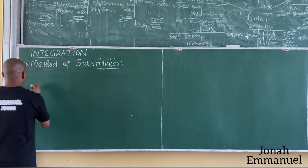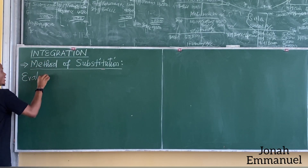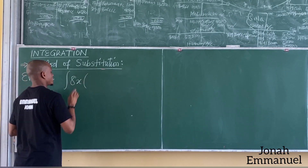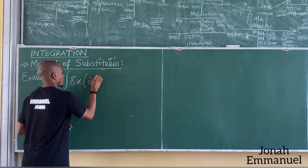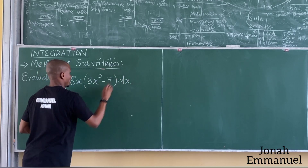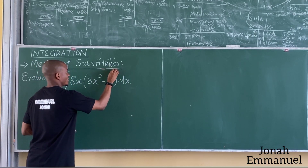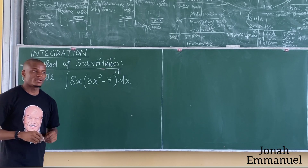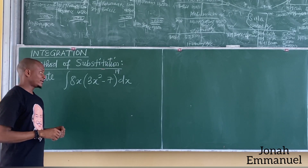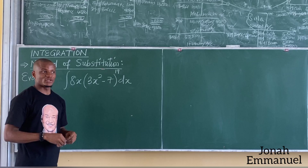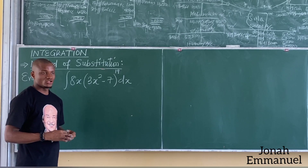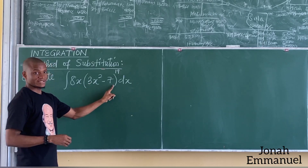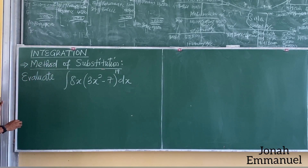For example, if I'm asked to evaluate the integral of 8x into (3x squared minus 7) to the power 19 dx. If I'm asked to integrate this, I could expand it to the power 19, but that would be way too large. So for this case, I will use a single alphabet to represent all of this. I'll take the alphabet to be u.